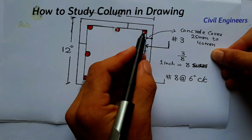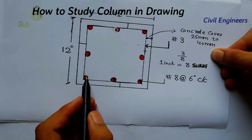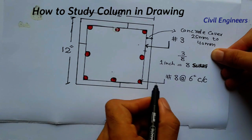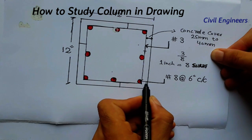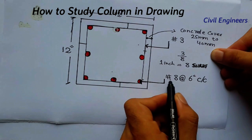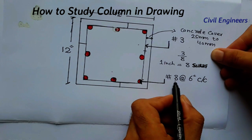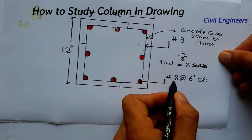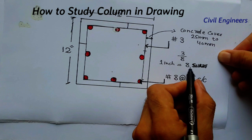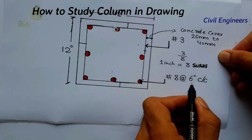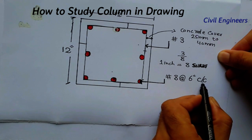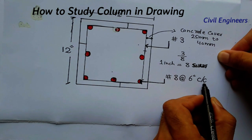This column has 8 numbers of steel or 8 numbers of bars. This mark shows you the diameter of the bar, which is 8 — meaning 8 sutras, which equals 1 inch. After that, the spacing is 6 inches, which shows you the center-to-center distance.